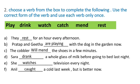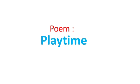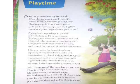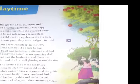Okay students, hope you understood verbs. Now children, in today's class we are also going to read the poem 'Playtime.' Open page number 28. We will read this poem and underline the difficult words. Keep your finger where I am reading.